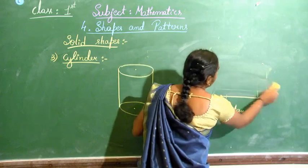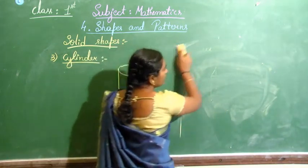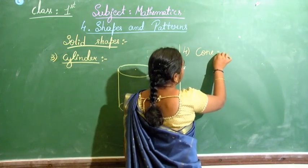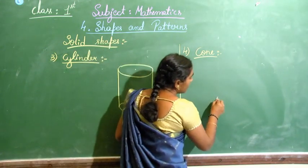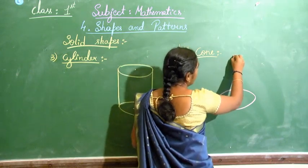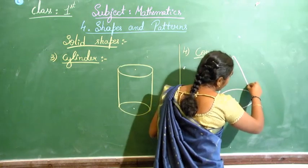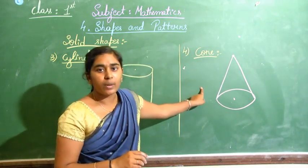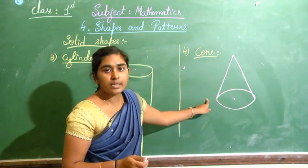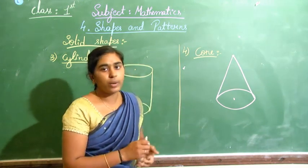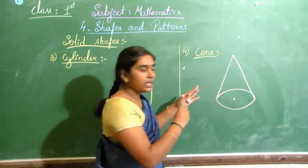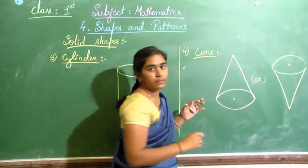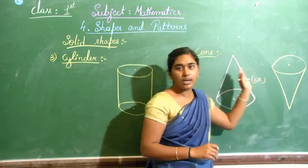The next shape is a cone. The cone comes with one side having a circle and the other side having a sharp end. You can give a birthday cap as an example of a cone, or an ice cream cup. The cone can be drawn upside down also — both orientations are correct.